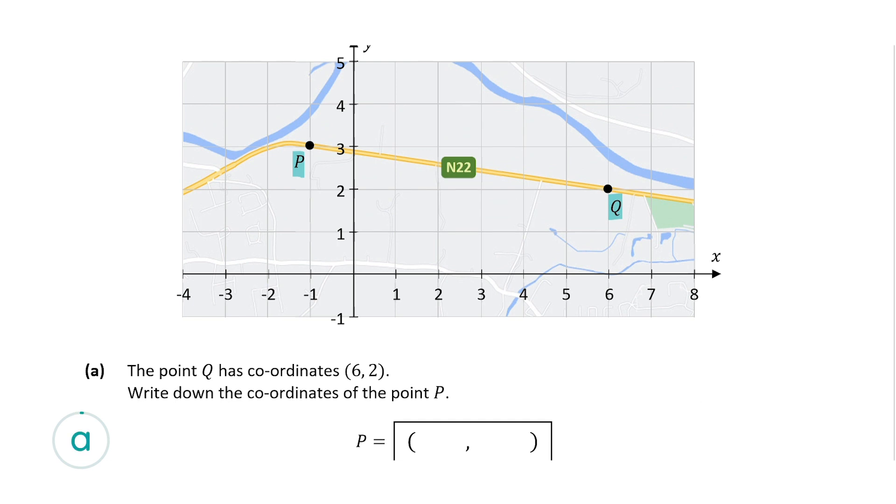So question A tells us that the point Q has the coordinates (6, 2) and we're asked to write down the coordinates of P. So what's the X value for P? We can see that the X value if we go down here is -1. And what's the Y value for P? Straight across here is 3. So the point P is (-1, 3).